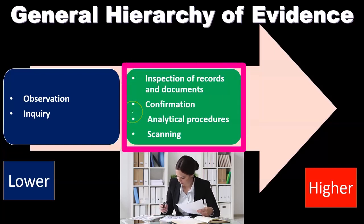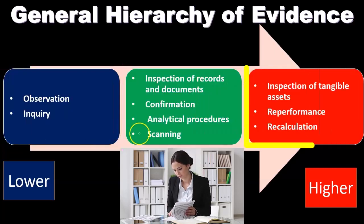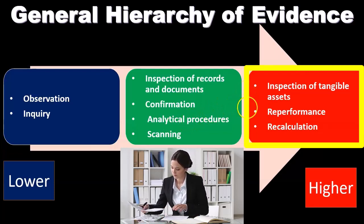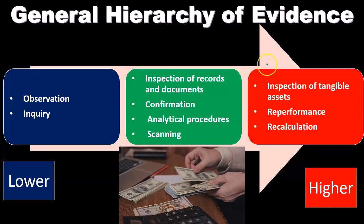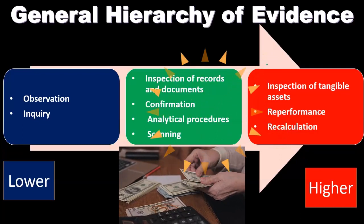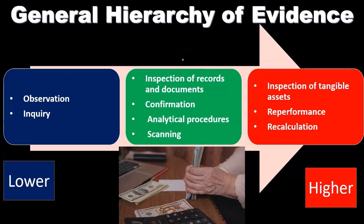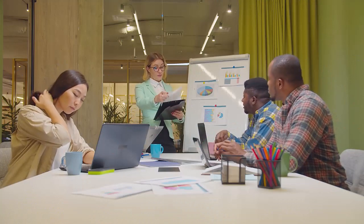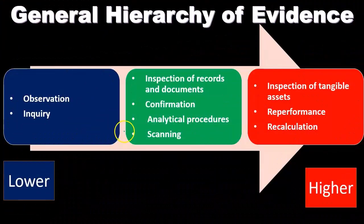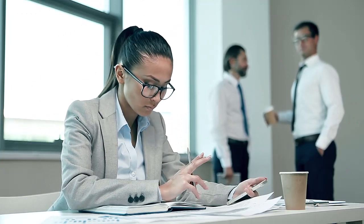At the mid level we have inspection of records and documents, confirmation, analytical procedures, and scanning. At the high level we have inspection of tangible assets, re-performance, and recalculation. The high-level evidence is the stuff we do as the auditor — we've recalculated it, we've re-performed it, we went and inspected it — so we can rely on our own work. At the mid level, confirmations from a third party are better than internal confirmations. At the lower level, the evidence is more dependent on the people we are judging as to whether they put the financial statements together fairly.